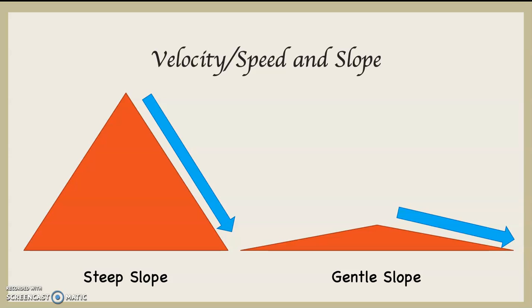Take a look at this diagram. If we were in a classroom, I would draw this on the board, but we're online. This has to do with velocity, speed, and slope. On the left-hand side, you can see I've drawn a steep mountain. The blue arrow represents water flowing down the side of that mountain. On the right-hand side, there's a gentle slope with water, the blue arrow, going across that gentle slope.